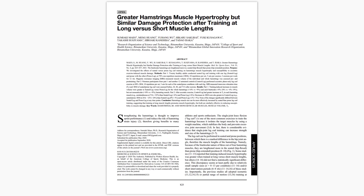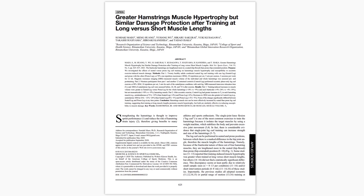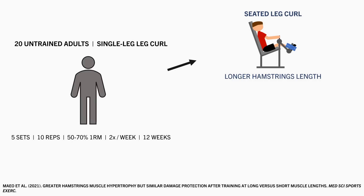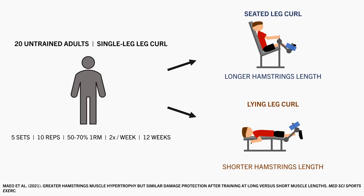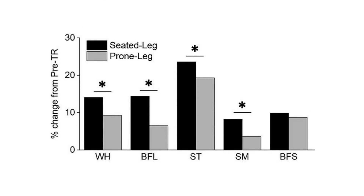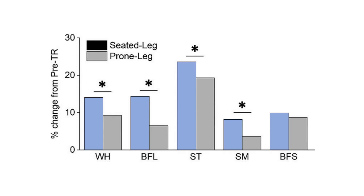This study compared the effects of the lying versus seated leg curl exercises on hamstrings hypertrophy. 20 untrained adults performed 5 sets of single-leg leg curls for 10 reps, with gradually increasing loads of 50–70% 1RM individualized to each condition, 2 times per week for 12 weeks. One leg performed the seated leg curl, which trains the hamstrings at a longer length because the hips are flexed, while the other leg performed the lying leg curl, which trains the hamstrings at a shorter length due to the hips being extended. It was found that all hamstrings muscles achieved superior increases in muscle volume in the leg performing the seated leg curls, shown in blue, compared with the lying leg curl, shown in orange.